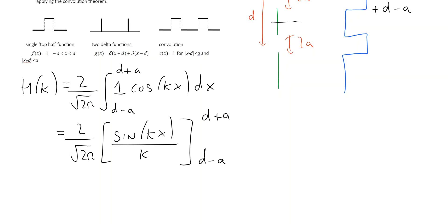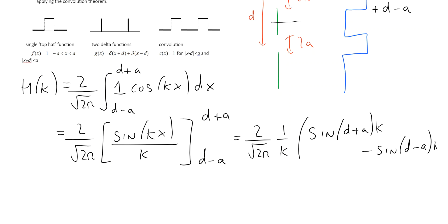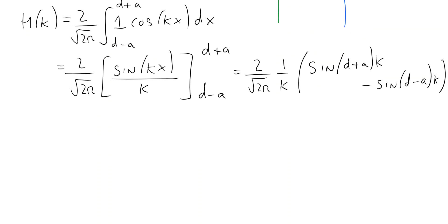Substituting the limits gives 2 over the square root of 2π, times 1 over k, times the quantity sine(d plus a)k minus sine(d minus a)k. Although we can leave the solution in this form, for comparison later on we're going to manipulate it slightly, using the equations for the sine of a sum and the sine of a difference of angles.